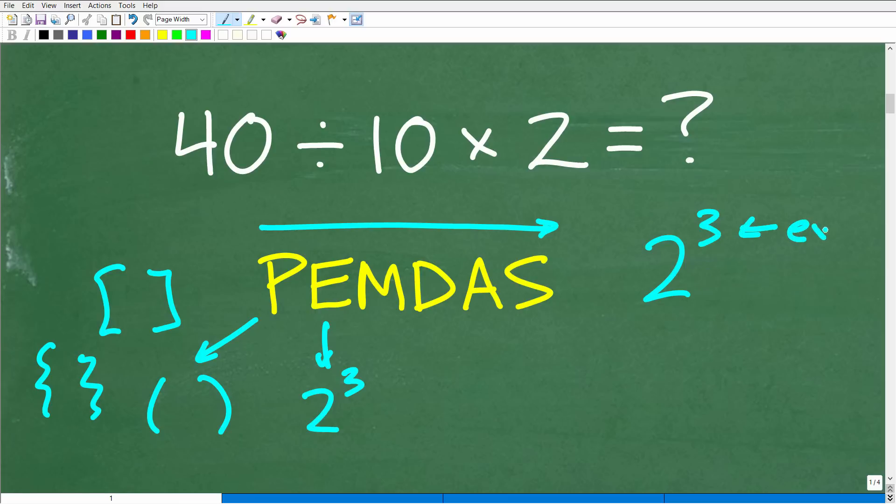the three here is called the exponent, this little three here, or this part of the power, and this bigger number down here is called the base. So a power, like two to the third power, has two parts to it, this exponent and this base. So this E right here stands for exponent, but you can kind of think of this as powers.